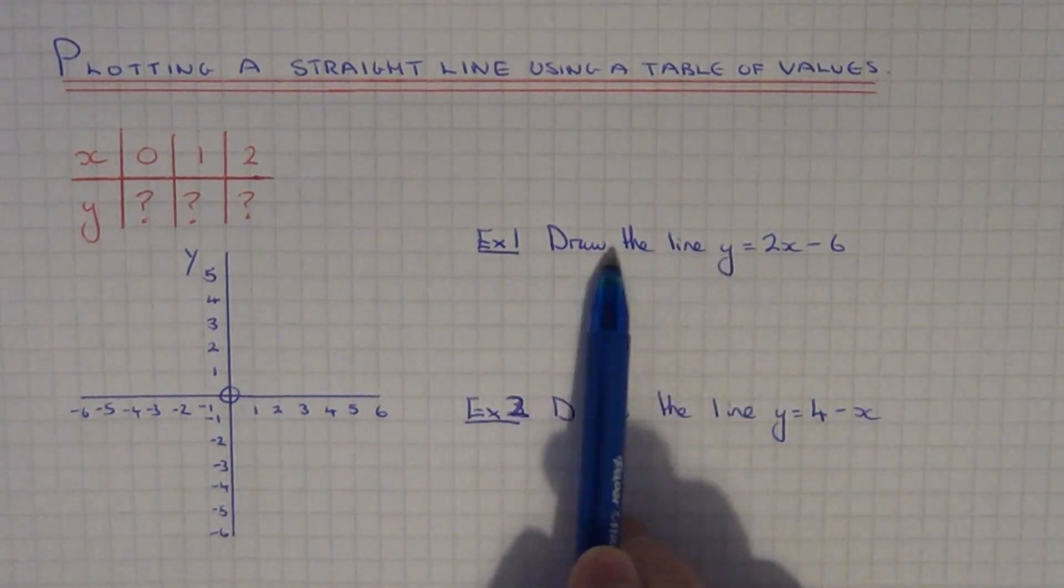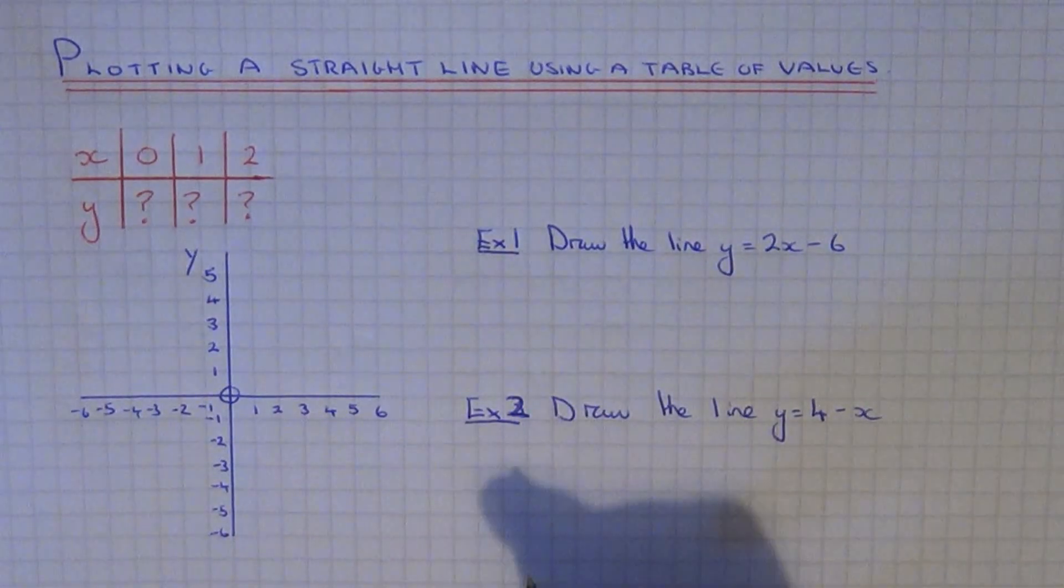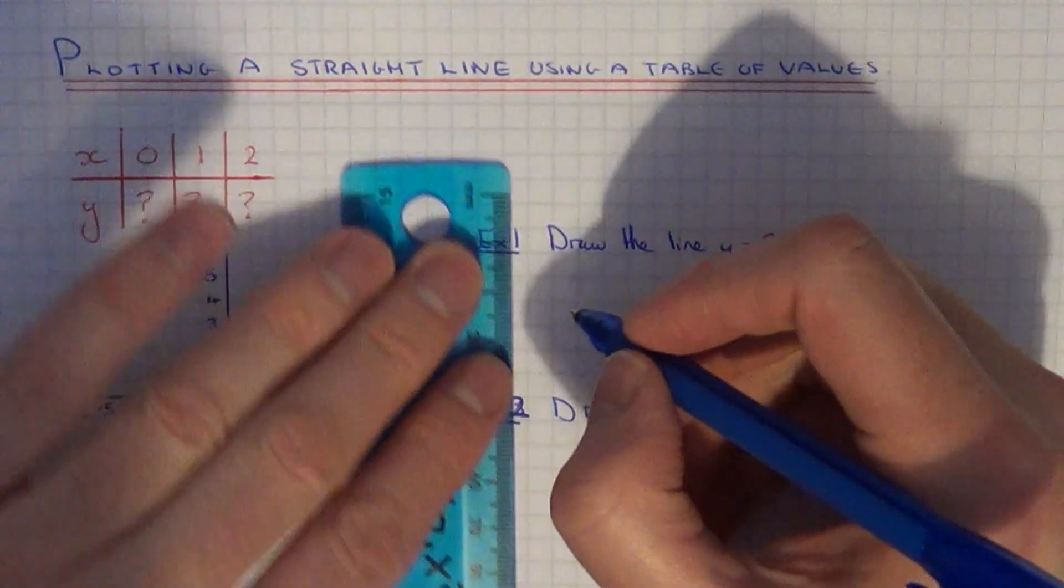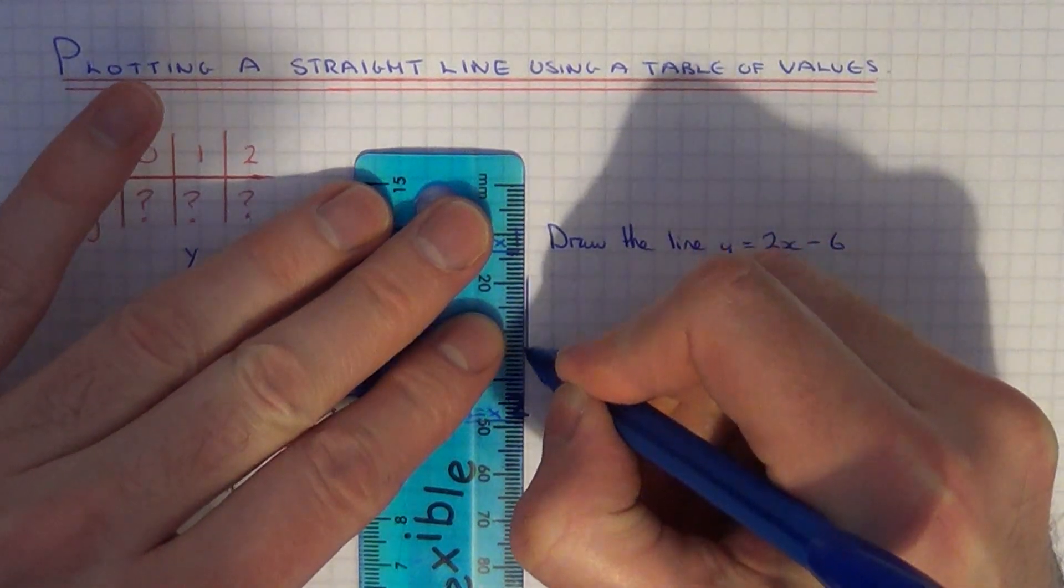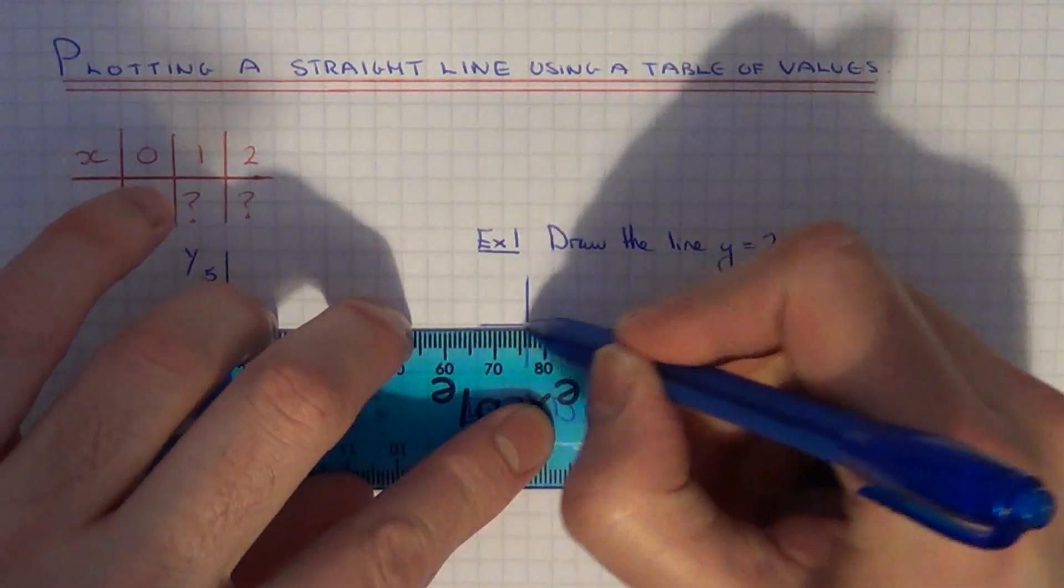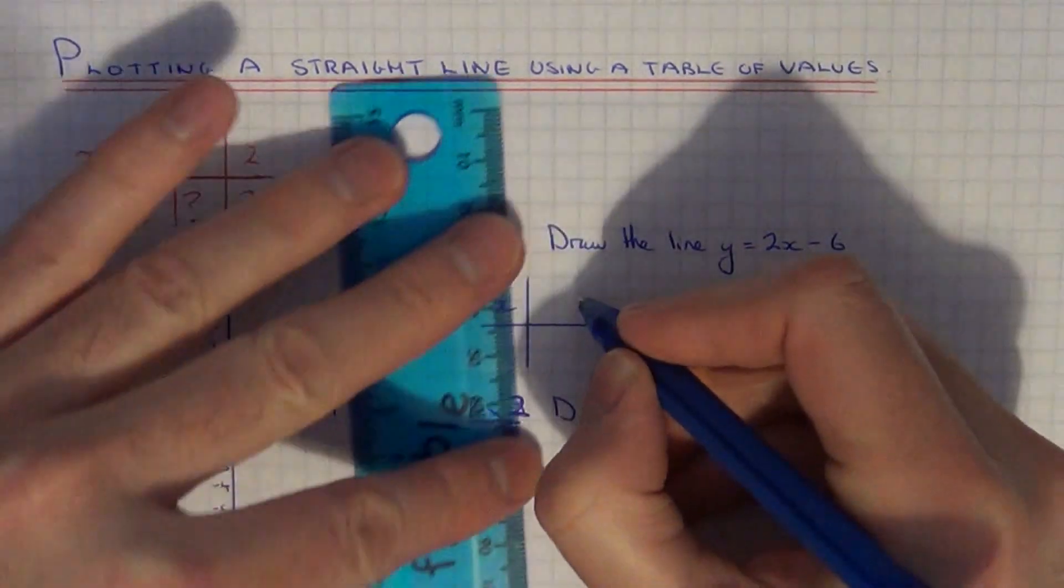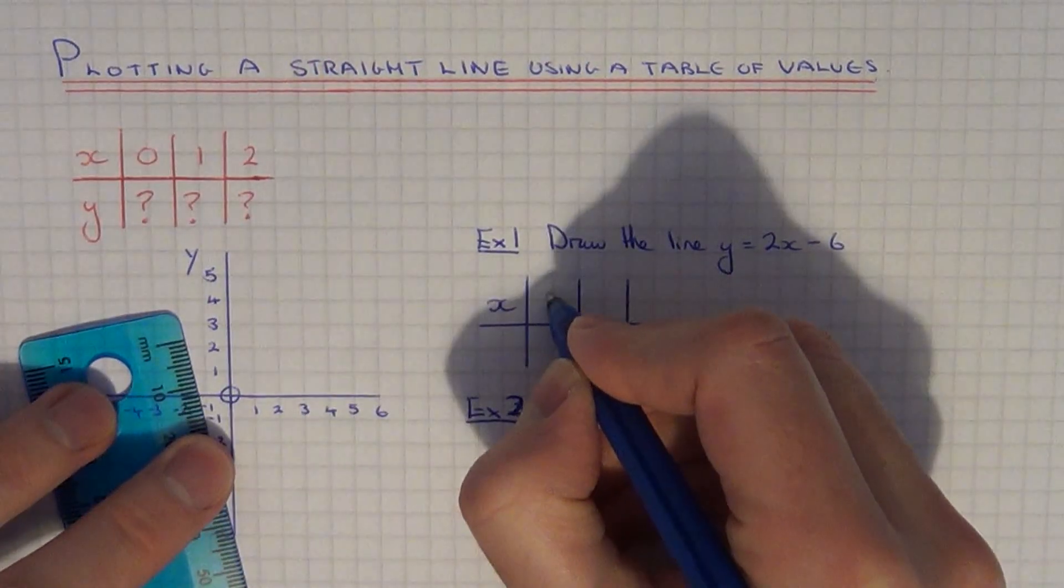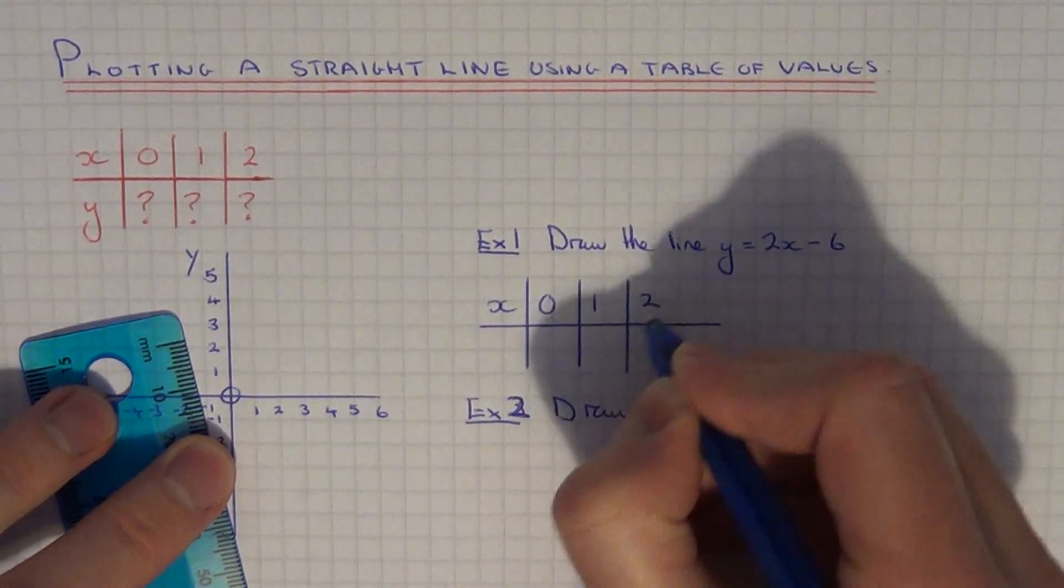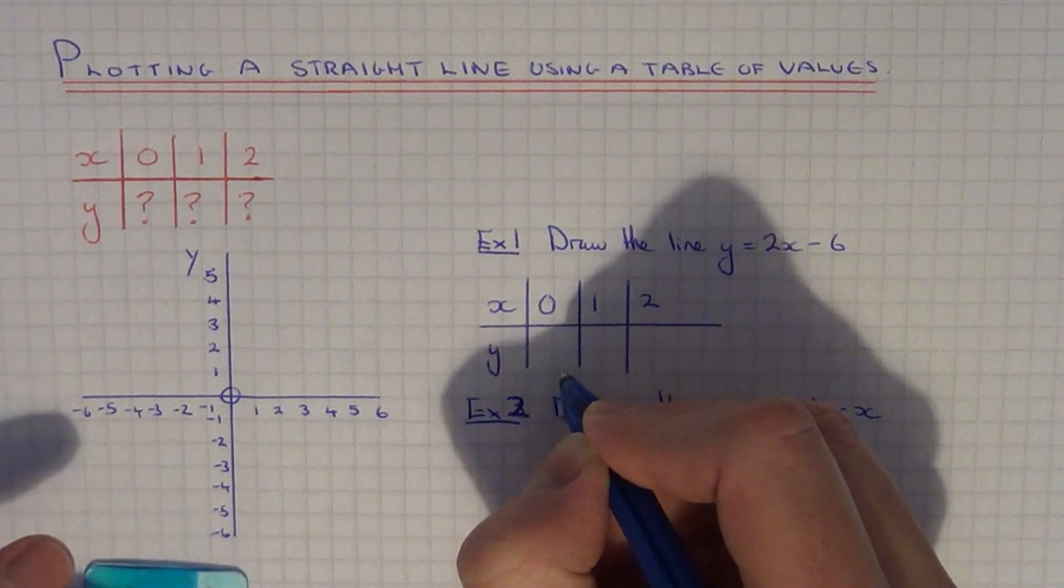So let's have a look at example 1. I'm going to draw the line where y equals 2x minus 6. So if I draw my table of values, what I'm going to do is pick the x-coordinates 0, 1, and 2, and we're going to work out the y-coordinates.